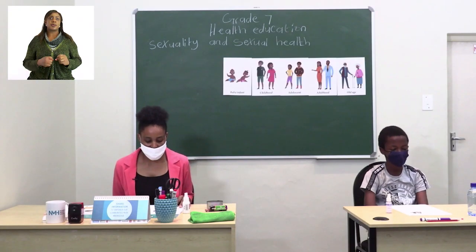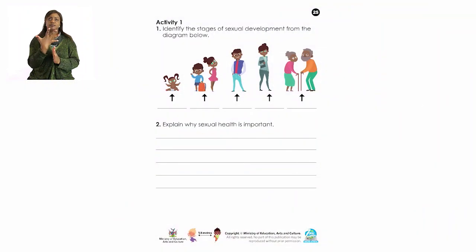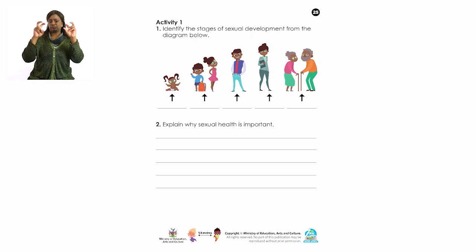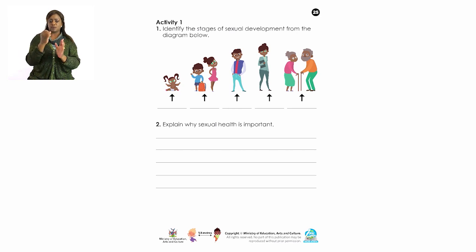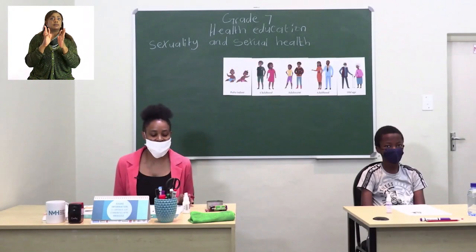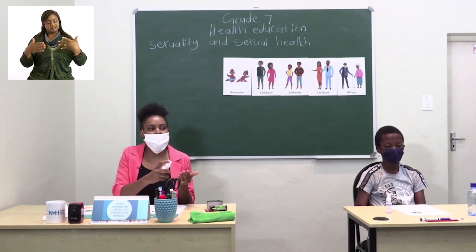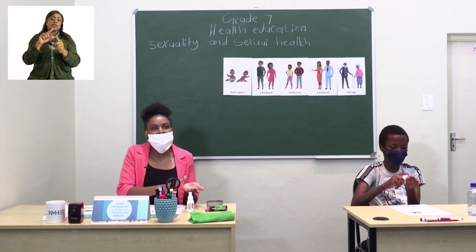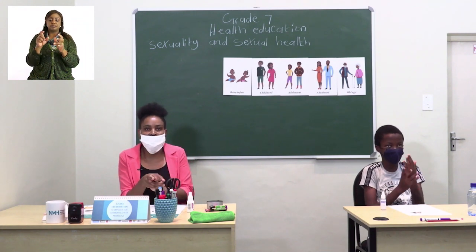Let's turn to page 25, where you can find your activity. This is activity 1. Number 1: identify the stages of sexual development from the diagrams below — you should just fill in the spaces provided. Number 2: explain why sexual health is important. I hope you have enjoyed this lesson and please remember to sanitize your hands and always put on your mask.